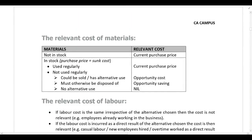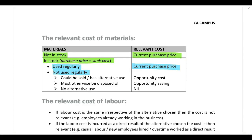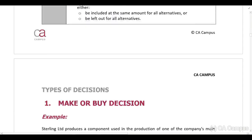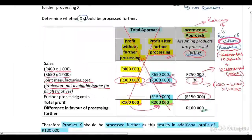For the 1,000 kilograms not in stock, the relevant cost is the purchase price of 10 Rand per kilogram. For the 100 kilograms in stock, I can't use 7 Rand because that is a sunk cost. Since the business uses this material regularly, if they use it for this order they'll have to replace it — so for both portions, the relevant cost is the current purchase price of 10 Rand per kilogram.